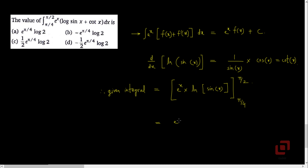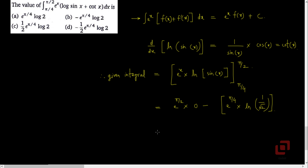Let us now substitute x as pi by 2, which is the upper limit, which will give us e^(pi/2) into log of sin(pi/2). Sin(pi/2) is 1 and log of 1 is 0. Let us now substitute x as pi by 4. The first term will be e^(pi/4) into log of sin(pi/4). Sin(pi/4) is 1 upon root 2, so it will be log of 1 upon root 2. e^(pi/2) into 0 will be 0, so no need to write it.